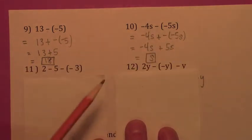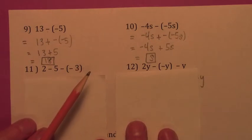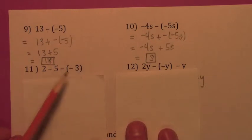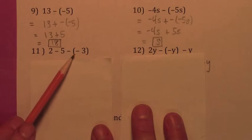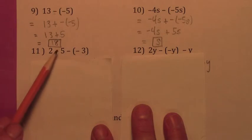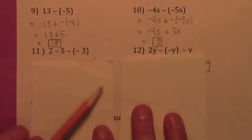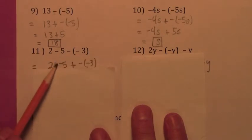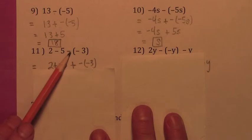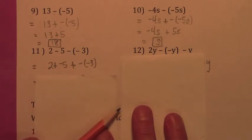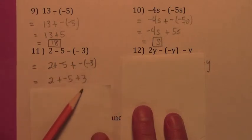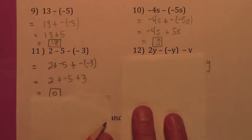We'll do a couple more, and then I'll give you something to try. Two minus five minus negative three: both minus signs change to plus and negative. Then get rid of the double negative on the three, combine everything, and we get zero.